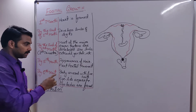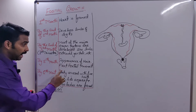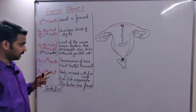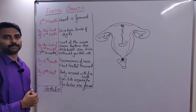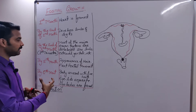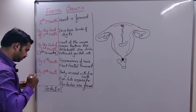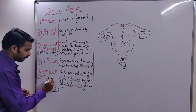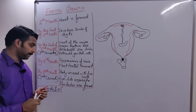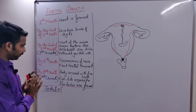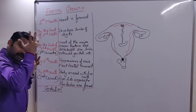By the end of the fifth month, hair starts appearing on the body, and the first fetal movement is also seen during the fifth month — a highly asked exam question. By the end of the sixth month, which is the second trimester, the body is covered with fine hair, eyelids separate, and eyelashes are formed. So by the fifth month, appearance of hair begins; by the sixth month, the body is covered with fine hair.